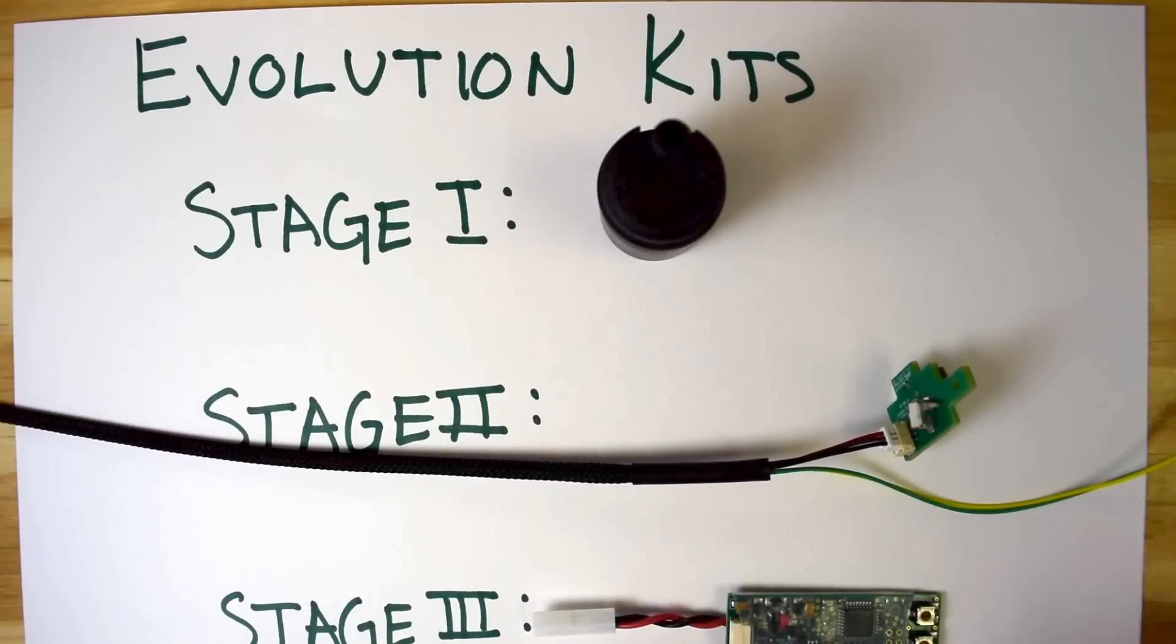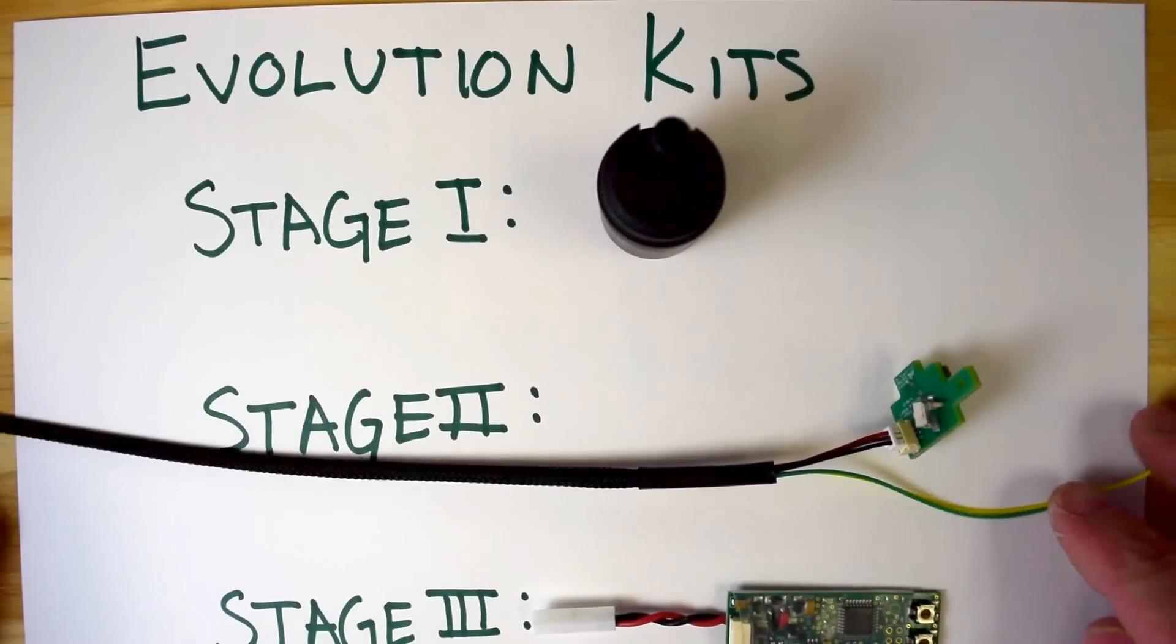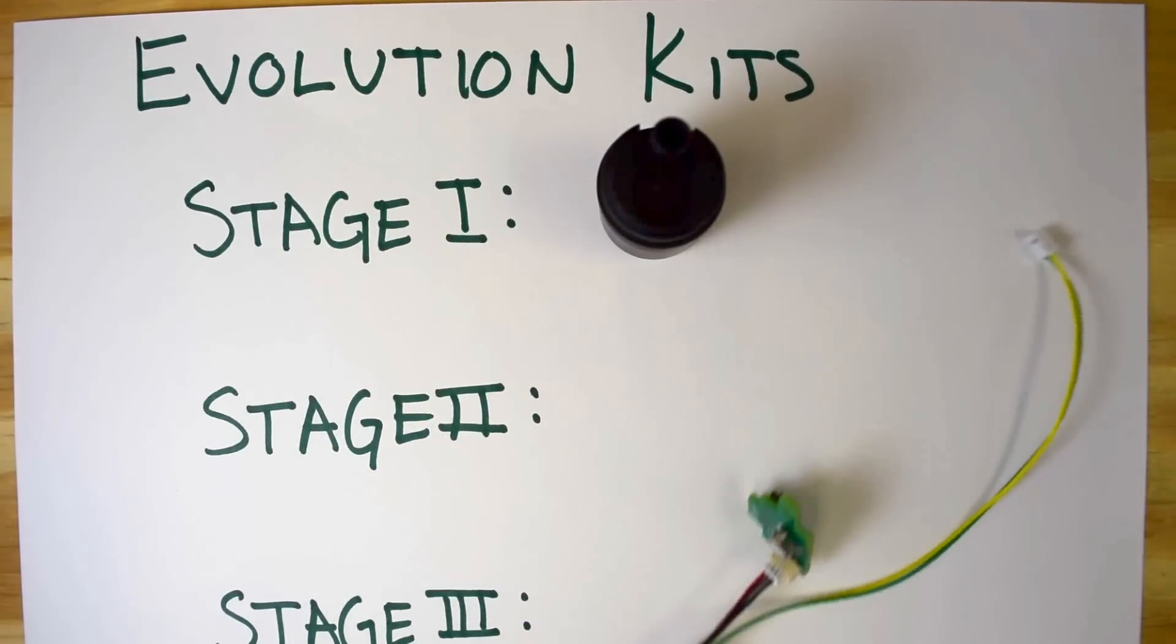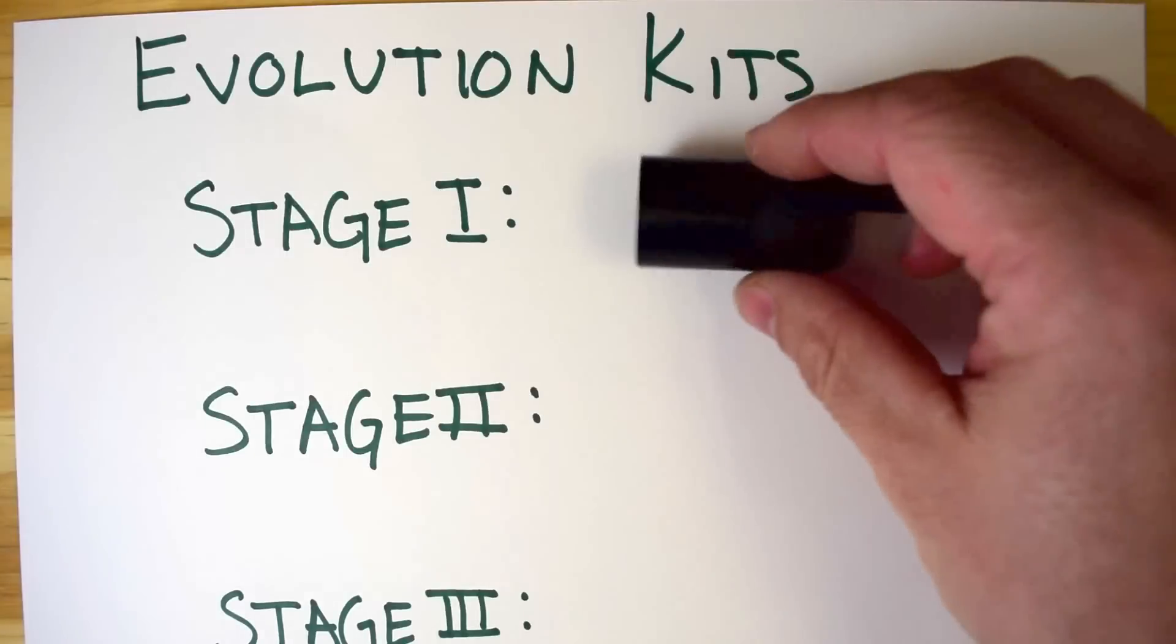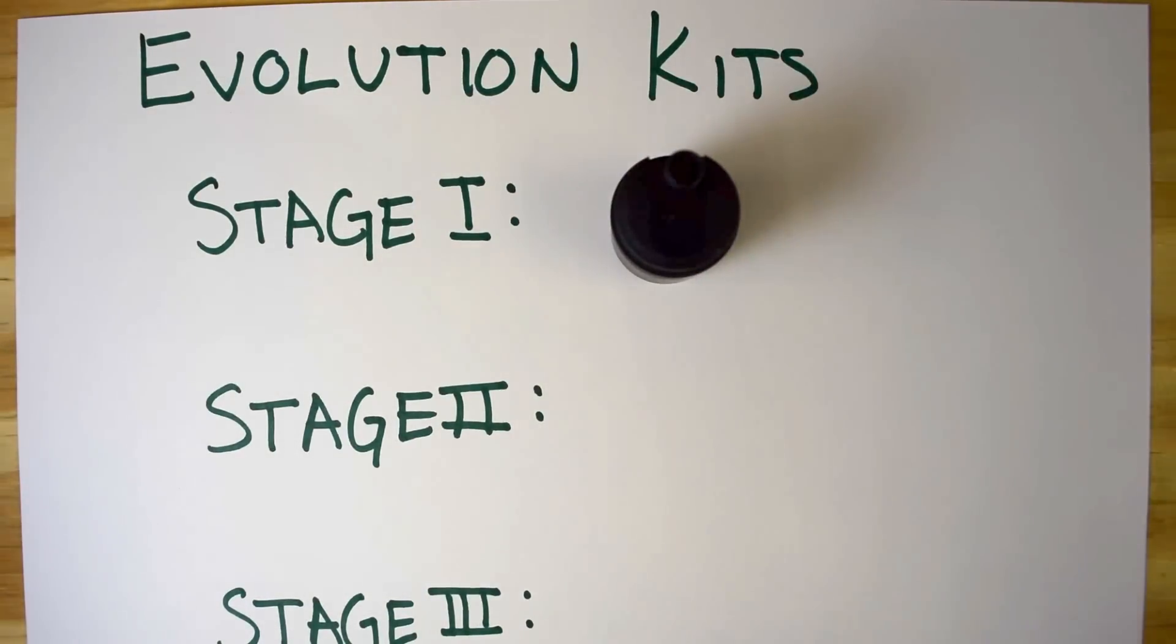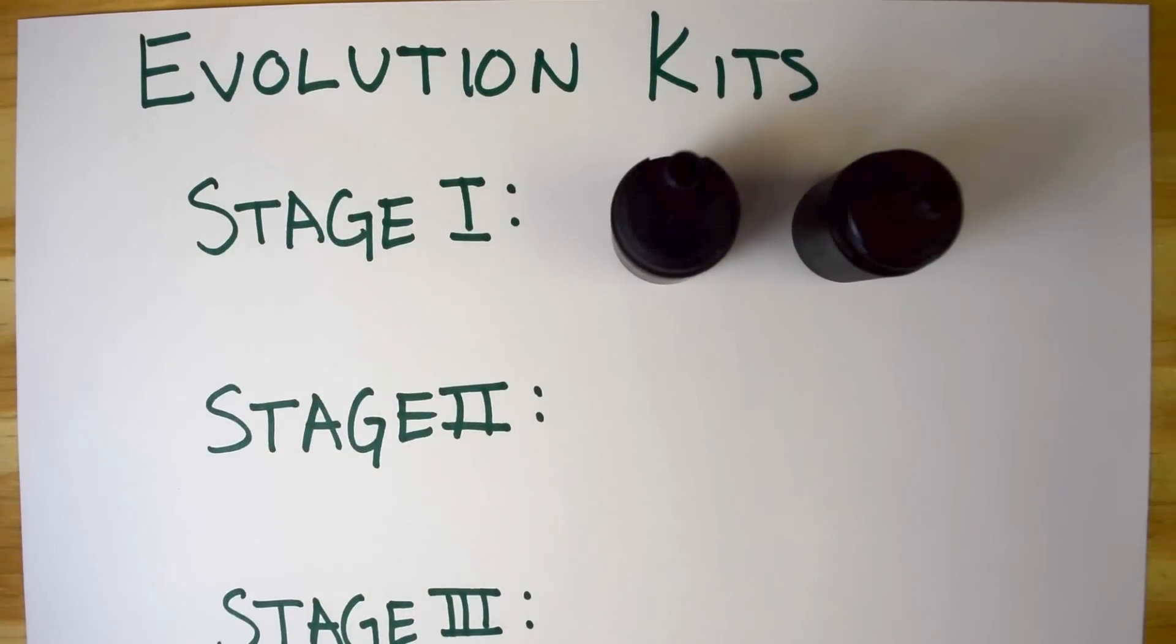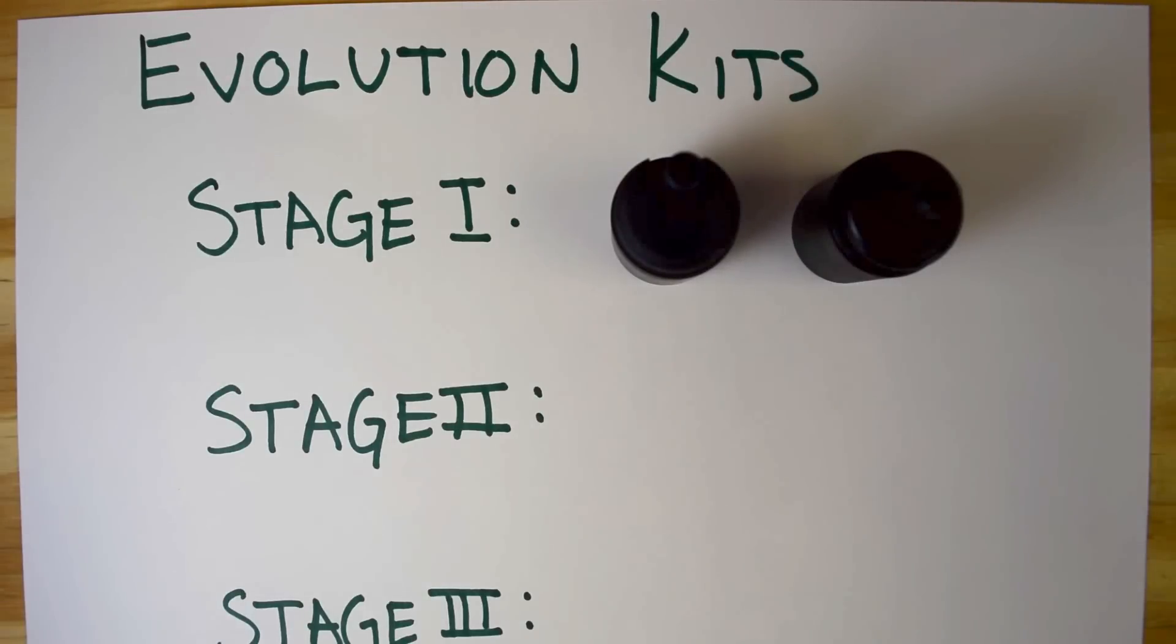If you already have all the wiring and such that you need for your gun, and you just want the mechanical parts, you just need the stage one kit, center line, offset, whichever you need, and you can just swap those over real quickly. So let's take a look at how that works.